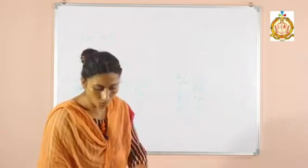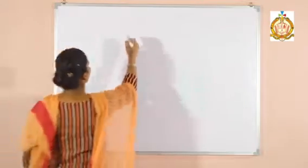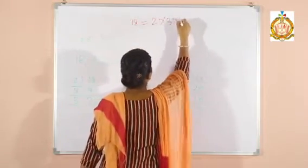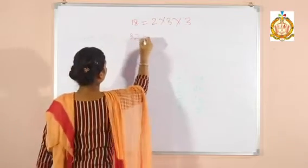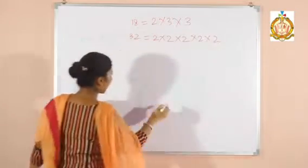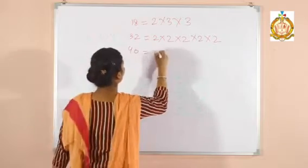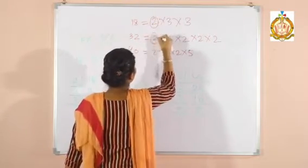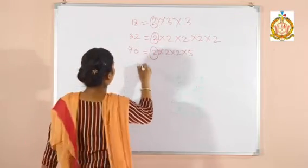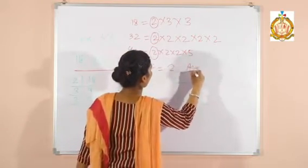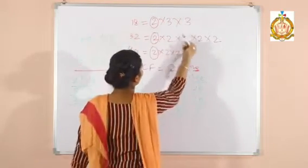Now write the factors of all the numbers separately. Factors of 18 are 2 × 3 × 3. Factors of 32 are 2 × 2 × 2 × 2 × 2. Factors of 40 are 2 × 2 × 2 × 5. Now select the common factor which is common in all the numbers. This 2 is common in all the numbers. So the Highest Common Factor of 18, 32, and 40 is 2. This is your answer, because no other number is common in all three numbers.